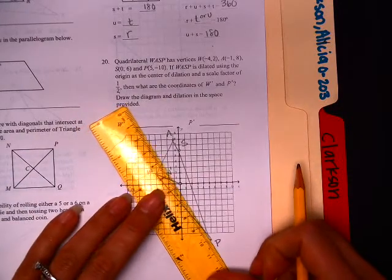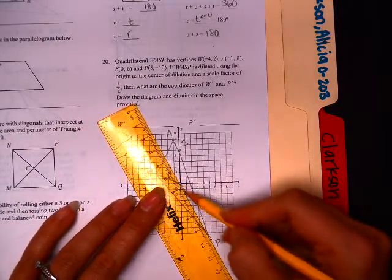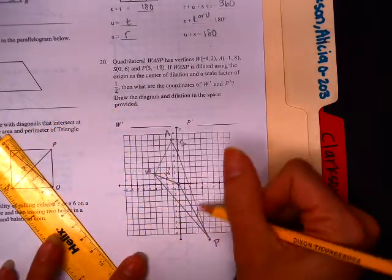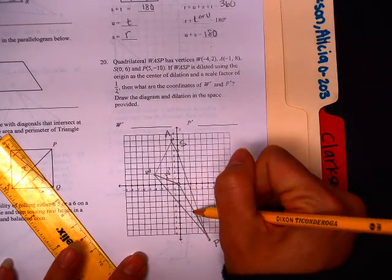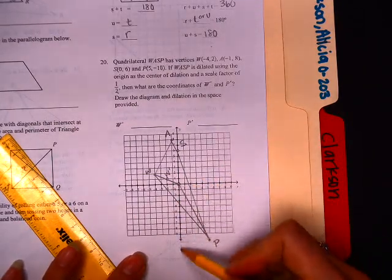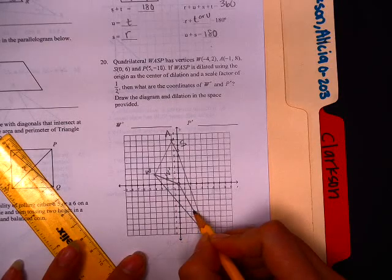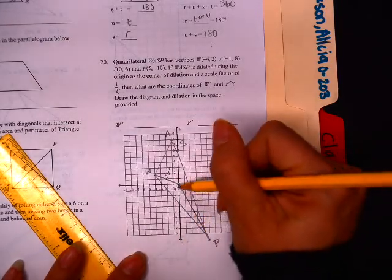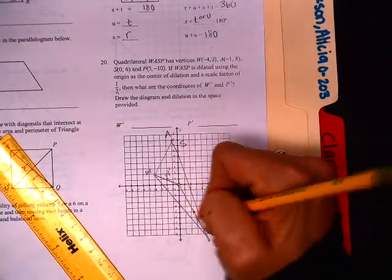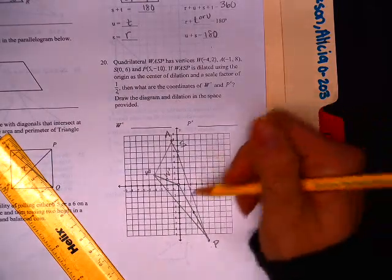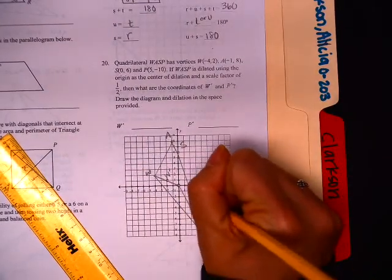We're going to do exactly the same thing for P. Now, we need to be a little bit careful here. This goes over 5. So, it's going to go over 2 and a half. And it goes down 10. So, it's going to go down 5. So, right here is over halfway, down halfway. So, this would be the slope that's halfway in between there.